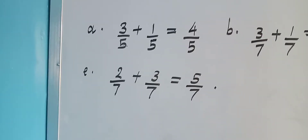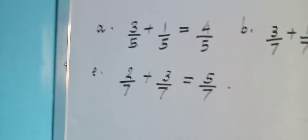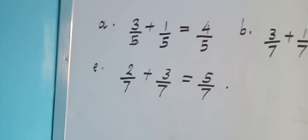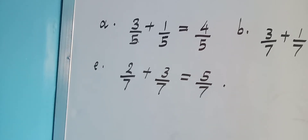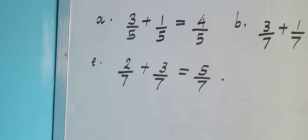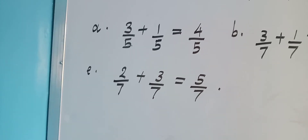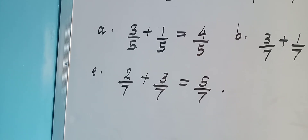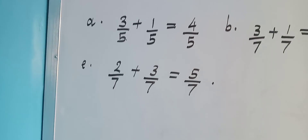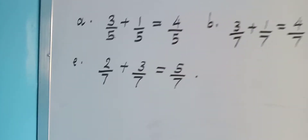Two divided by seven plus three divided by seven: two plus three is five, and the denominator stays seven. So the answer is five divided by seven. It is very simple.